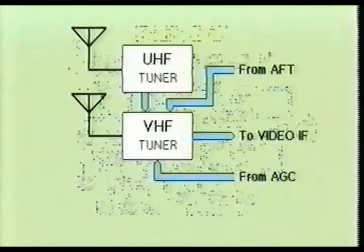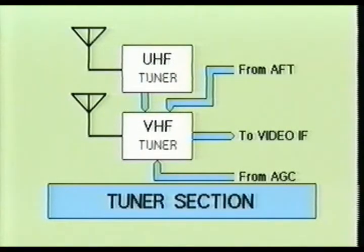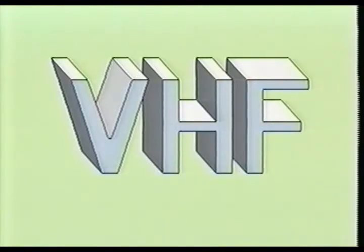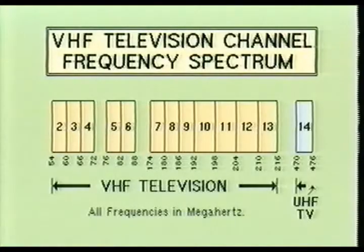Due to the extreme frequency differences between the UHF and the VHF channel allocations, two separate tuners are almost always required. In this portion of the video, we will concentrate on the VHF tuner stage. The VHF tuner is designed to receive television channels 2 to 13. Here you see a graphic representation of the VHF television frequency spectrum.